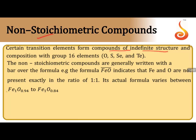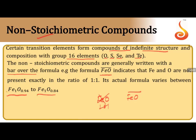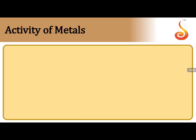Non-stoichiometric compounds are a special property shown by transition elements. They form compounds of indefinite structure and composition with group 16 elements like oxygen, sulfur, selenium, and tellurium. For example, FeO written with a bar over it indicates that iron and oxygen are not in a 1:1 ratio — it is actually Fe₀.₉₄O to Fe₀.₈₄O. The bar indicates it is a non-stoichiometric compound.